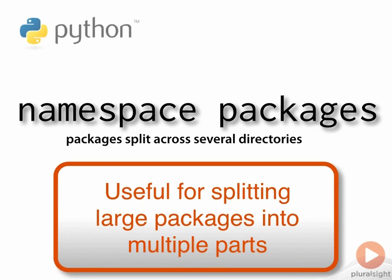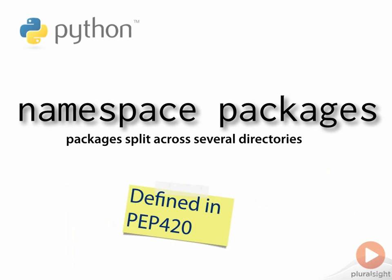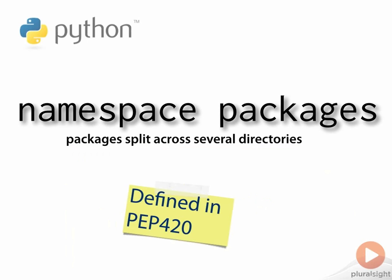Several approaches to addressing this need have been implemented, but it was in PEP 420 in 2012 that an official solution was built into the Python language. This solution is known as namespace packages. A namespace package is a package which is spread over several directories, with each directory tree contributing to a single, logical package from the programmer's point of view.